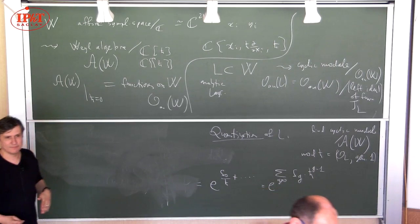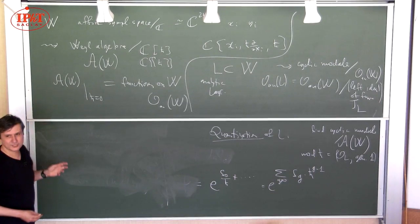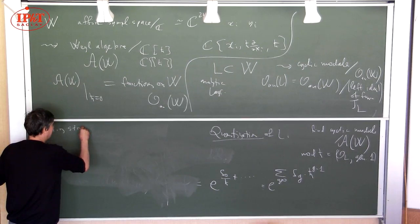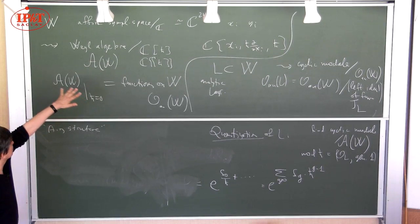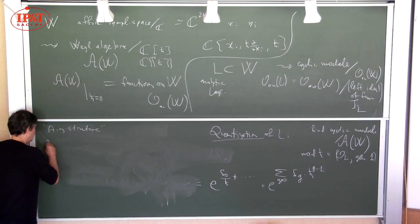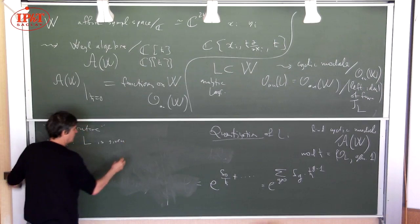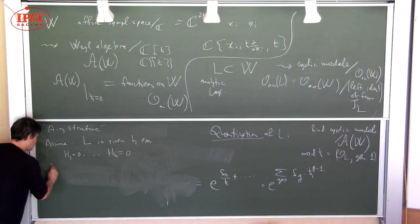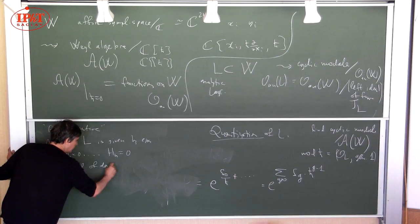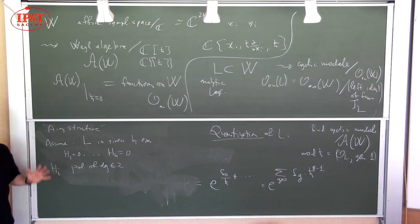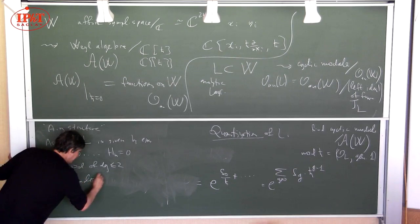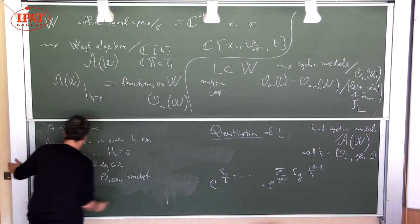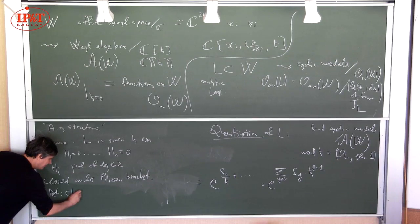So this is a general question: how one can quantize a Lagrangian submanifold and what extra data is needed. What we propose with Jan is very simple, and that's what you call an A-structure. Suppose we get a two-dimensional space and assume that L is given by a system of equations H1 equal to zero up to HN equal to zero. Since it's ten-dimensional, it's given by equations, and the H_i are polynomials of degree at most two in affine space, and they're closed under Poisson bracket. This is the definition of classical A-structure.